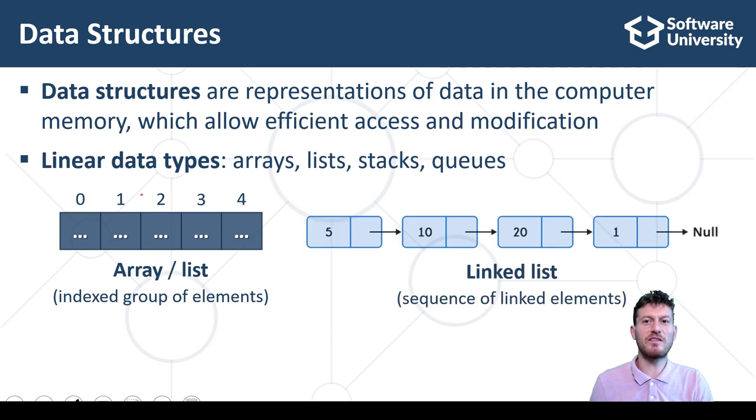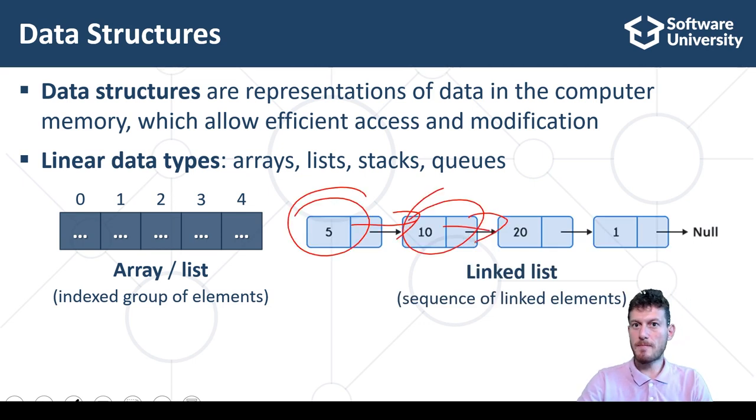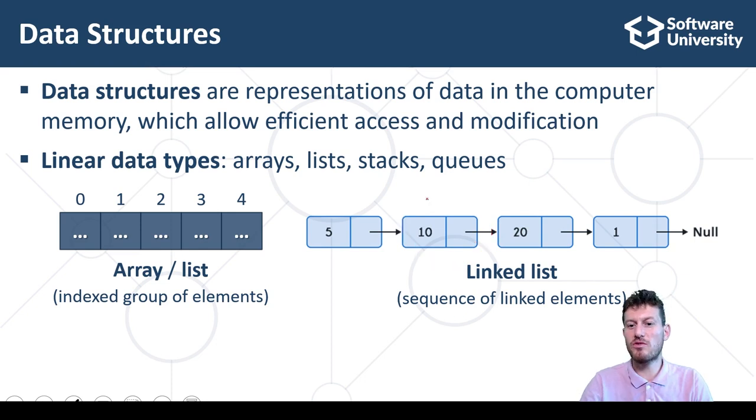This is an example of a linked list. It consists of elements where each element knows its next element. The last element has no or missing value as next element. Unlike array-based lists, linked lists do not provide direct access by index.